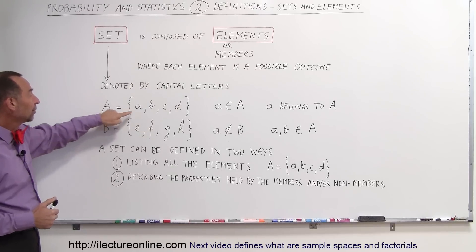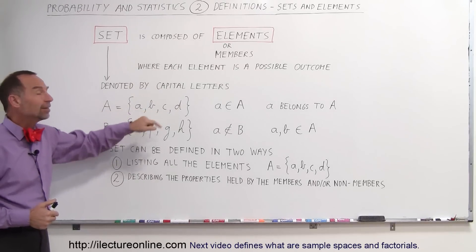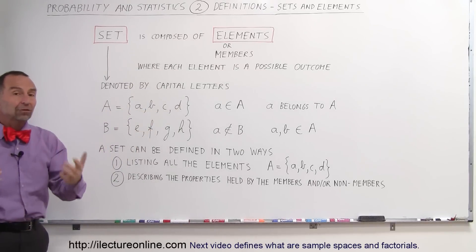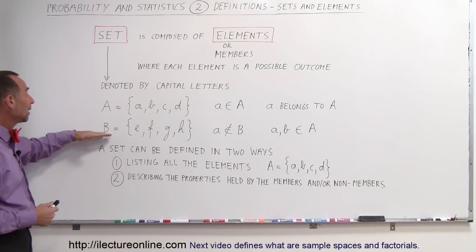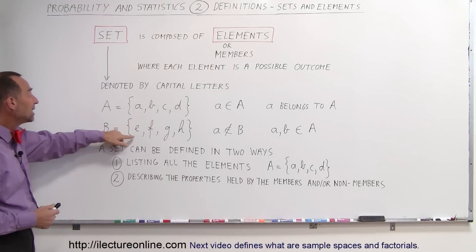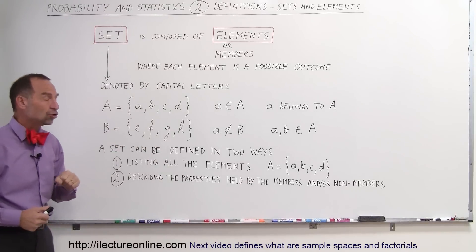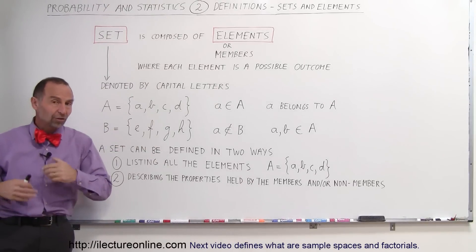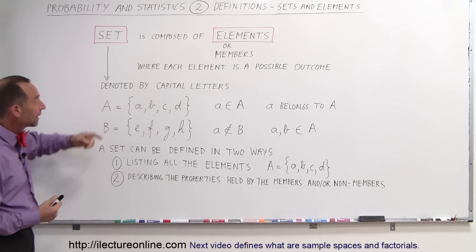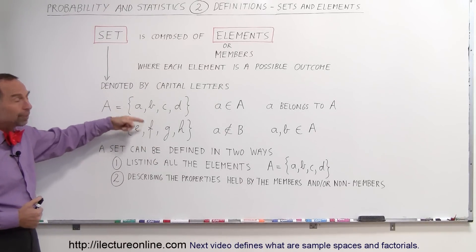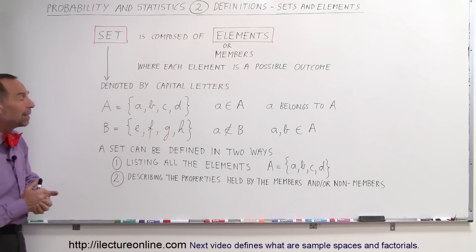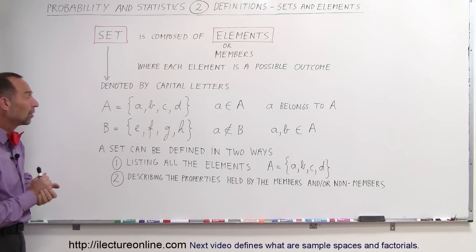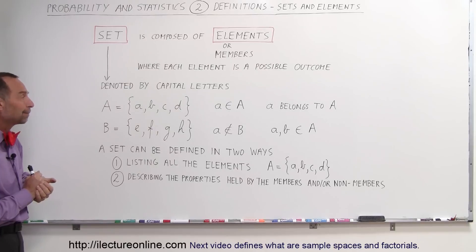Set A has elements a, b, c, and d — they could be the answers to a multiple-choice test — and then B has e, f, g, h. So what is the probability that the answer is a or b or c or d? That could be one of the things we can look at.